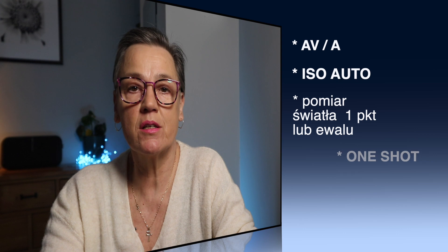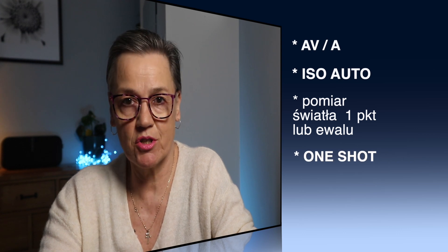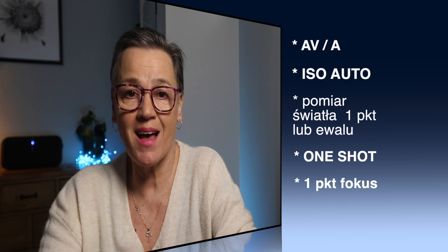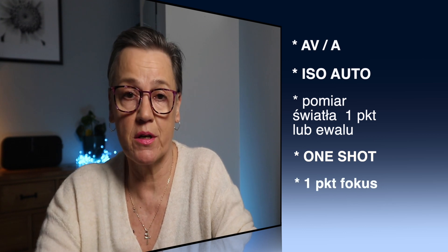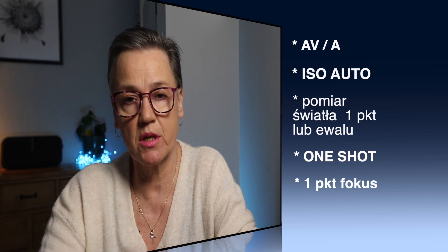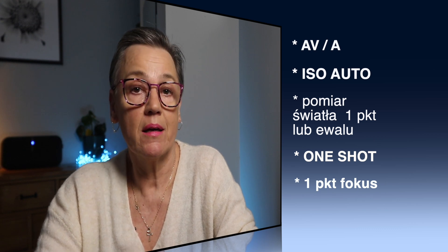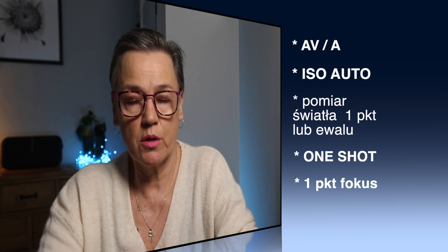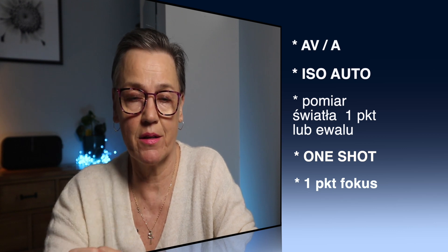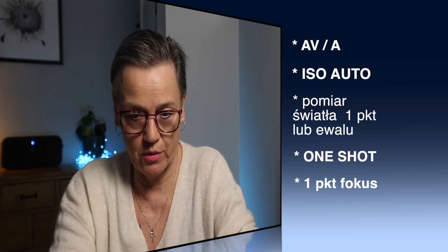Podsumowując ustawienia: priorytet przesłony, ISO na auto — aparat dobiera czas otwarcia migawki. Jeśli chodzi o pomiar światła — albo ewaluacyjny, który jest najbezpieczniejszy, albo centralny ważony. I one shot, czyli pojedynczy strzał. Fokus — pole jednopunktowe.